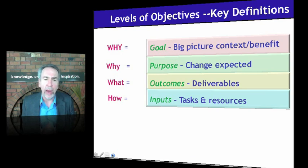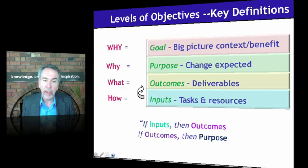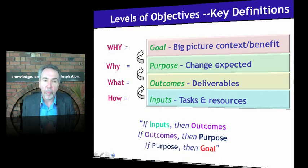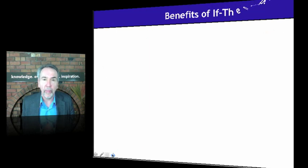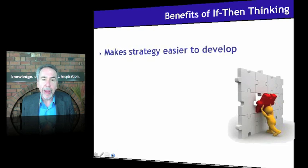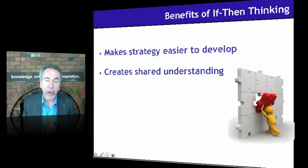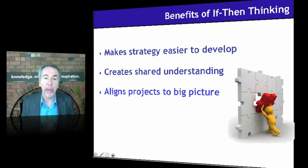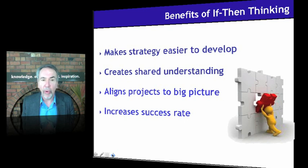There's a definite, specific, logical relationship among these objectives, and we can put it in the form of a phrase: if inputs, then outcomes; if outcomes, then purpose; if purpose, then goal. So we've structured our project into a strategic hypothesis, giving much more precision and rigor to our efforts. The benefits of if-then thinking: first, it makes strategy easier to develop; second, it creates shared understanding so people can agree and reach consensus; third, it aligns projects to the big picture; and finally, it dramatically increases the success rate, because so many projects produce outcomes but they don't ripple up to the strategic context.